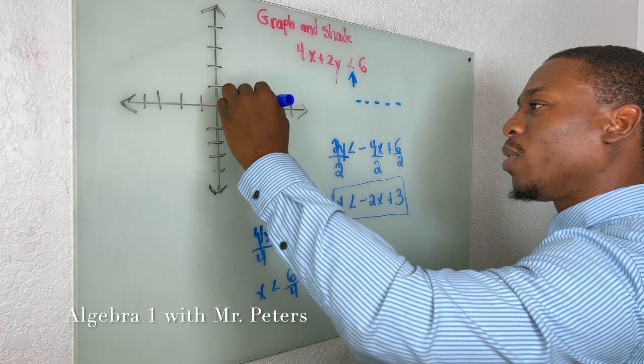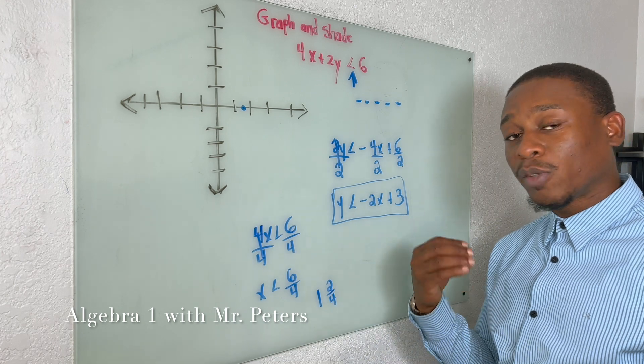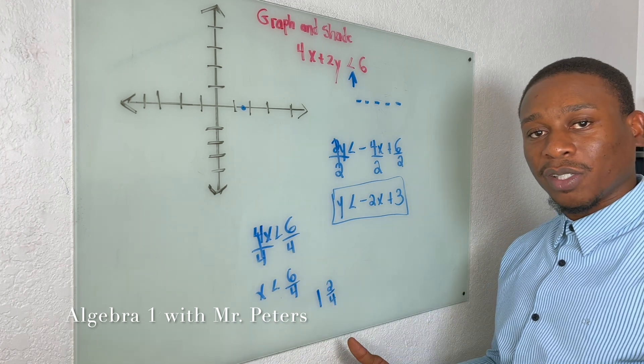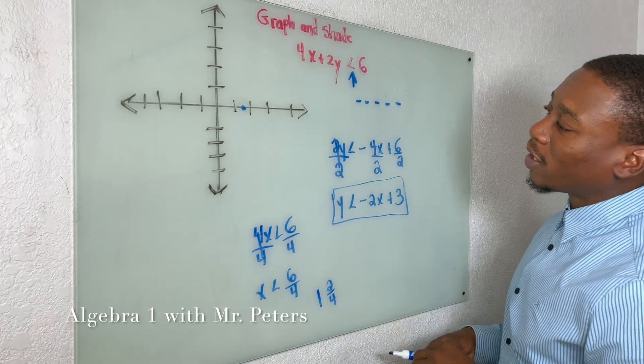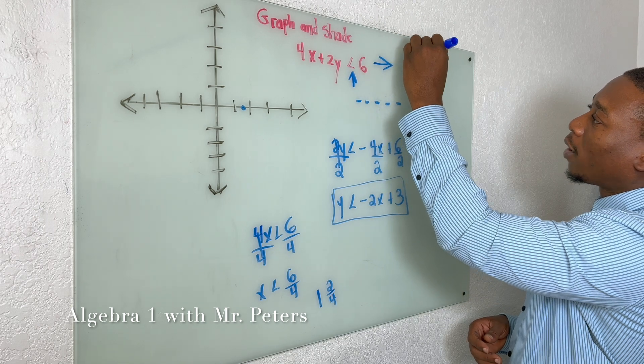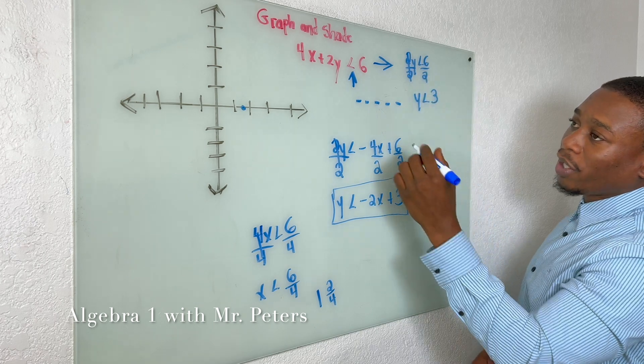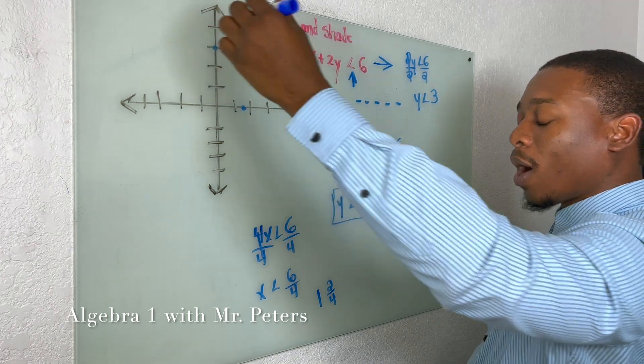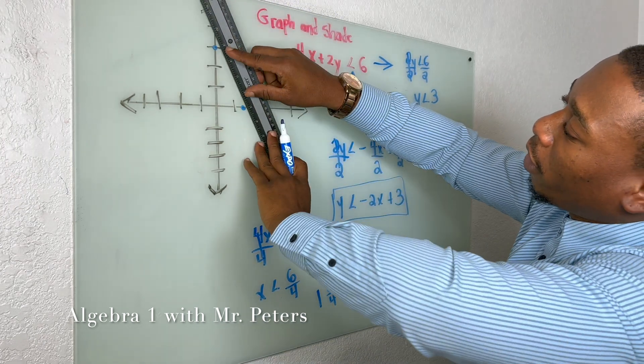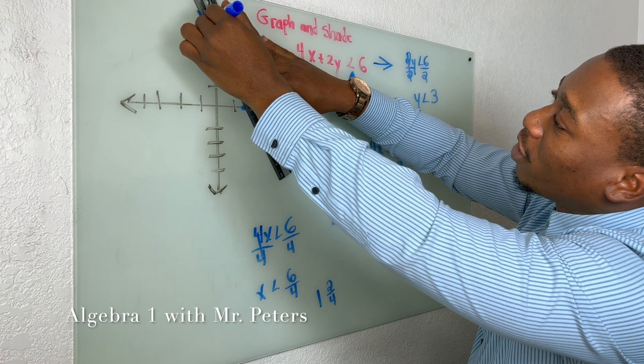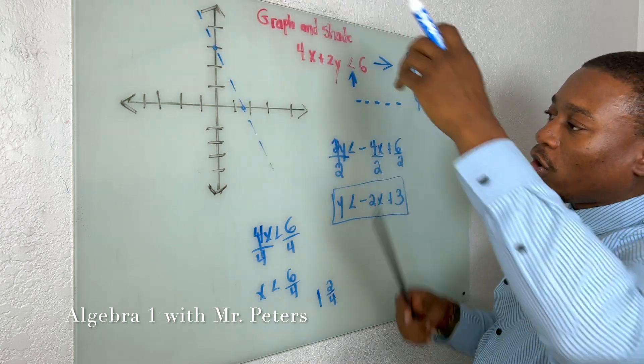Now when we do the same thing, 2y < 6, right? 2y less than 6, and we divide by 2, 2y < 3. So that's right here, right on the y axis. So now we're going to draw our line in. And like I just said, this should be a dashed line because it's greater or less than. So there goes our line.